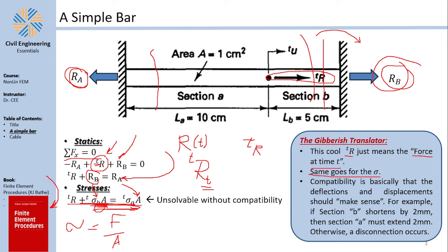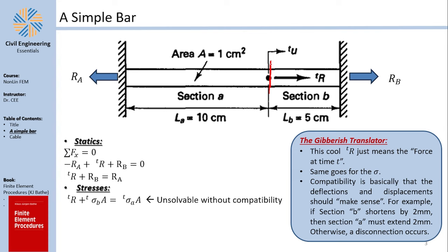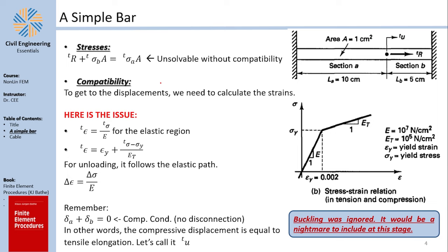This equation is unsolvable because I have two unknowns: sigma_B and sigma_A. I need the compatibility equation — something you may have studied and found nightmarish. Compatibility simply means that deflections and displacements should make sense. For example, if section B shortens by two millimeters, then section A should extend by two millimeters. If A doesn't follow B, you would have a disconnection — displacement that just doesn't make sense.